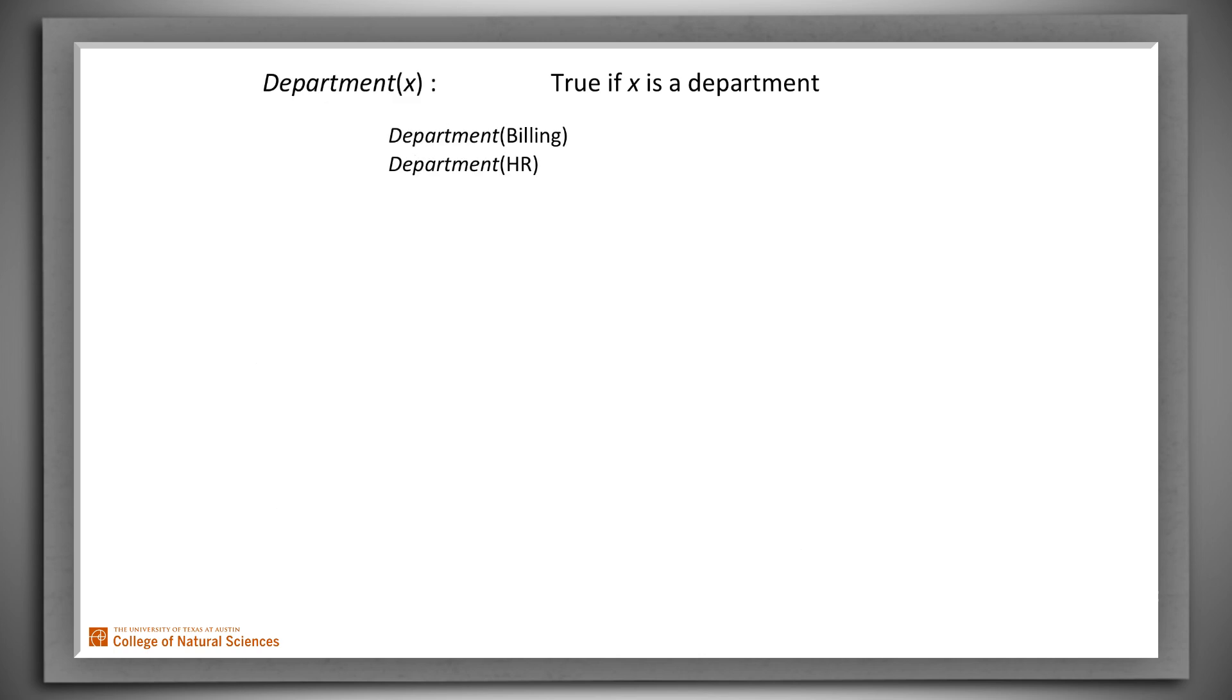Here was our first definition. We use X as a variable. We can read this definition as, for any value of X, Department of X is true if and only if X is actually a department. Now the scope of the variables that we use in definitions is an individual definition. So within this one definition in the box, we will have to substitute one value for X consistently in all places, in this case two of them, whenever we use X.